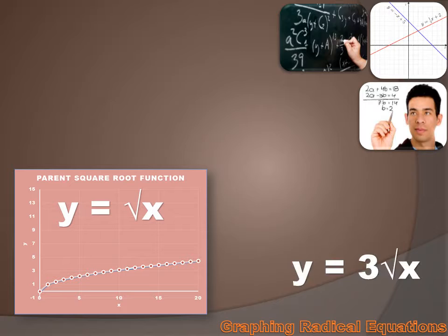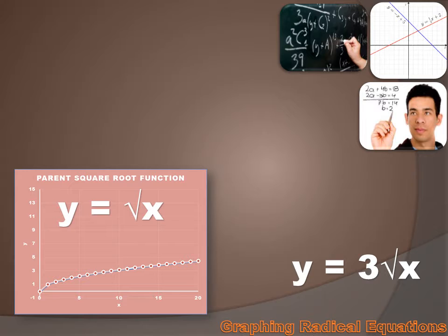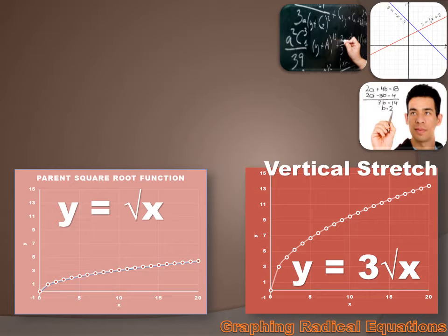Here's another radical function: y equals 3 times the square root of x. If we graph that, it wouldn't be just like the parent square root function, because we're multiplying all our values by 3. All our y values are going to be multiples of 3 greater than the y values in the parent function — for instance, where x equals 1, the value is going to be 3, and the next is 6. We're going to give it vertical stretch.